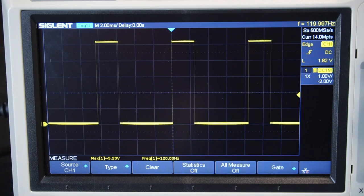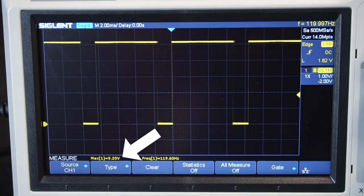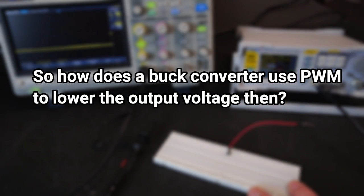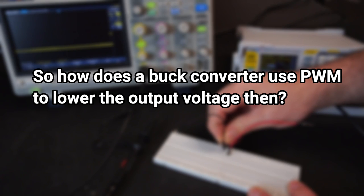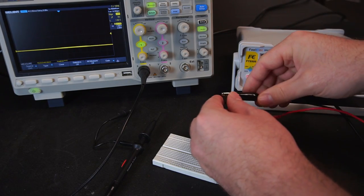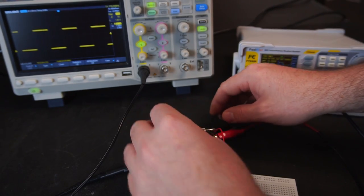You might have noticed that varying the duty cycle doesn't actually affect the voltage. It stays at 5.2 volts regardless of the duty cycle. So how does a buck converter use PWM to lower the output voltage then? To answer that I'll grab my breadboard and a few wire jumpers. I'll connect my signal generator to the breadboard and also connect the scope to the breadboard.